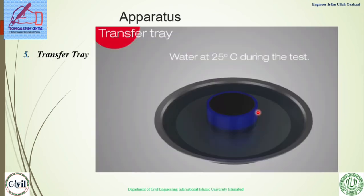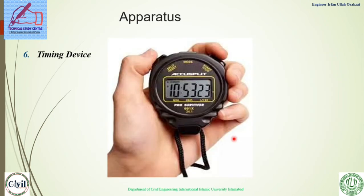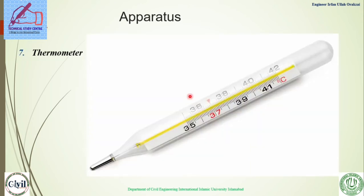The fifth apparatus is the transfer tray, which holds the containers covered with water to maintain the required temperature. A timing device — most probably a stopwatch — is required during the test if it is not automatic. A thermometer is required to measure both the temperature of the environment and the temperature of the sample.